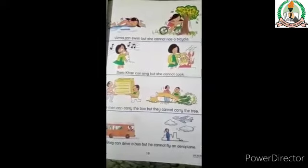Now look at page number 19. On page number 19, you can use the word 'but' in sentences. You can see that there are actions here — follow these actions and use 'but' in sentences. For example, look at number 1.